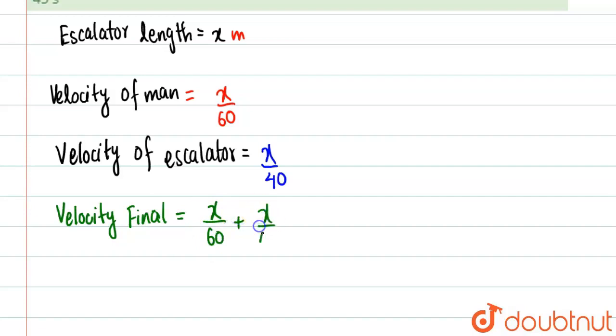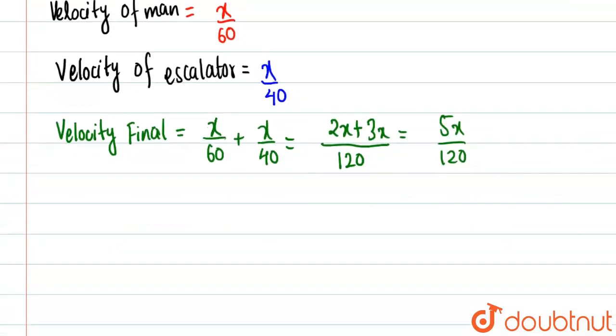So basically, this is the velocity, and the time taken we'll see in a second. The common factor will be 120, and it will be 2x plus 3x, which will be equal to 5x by 120. Let's leave it like this so it will be easy in canceling.